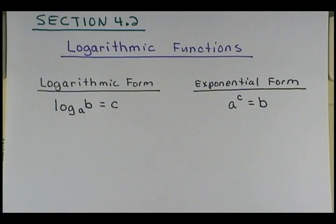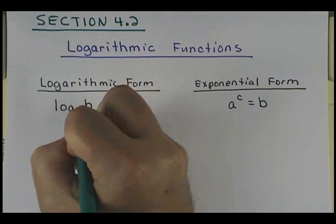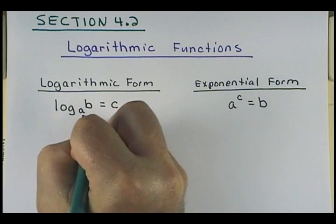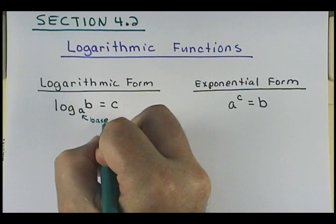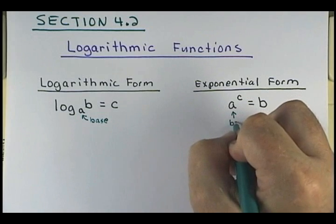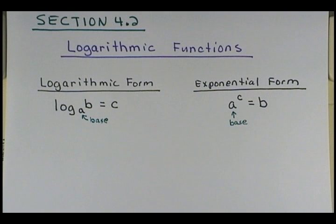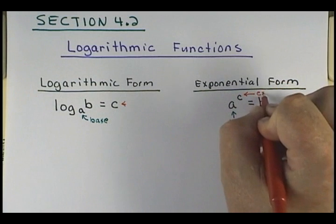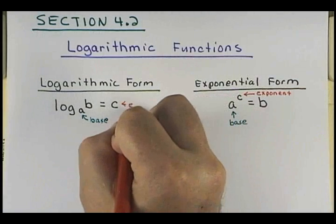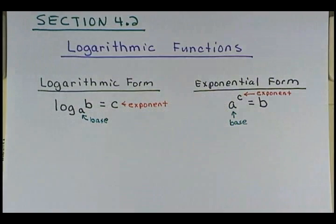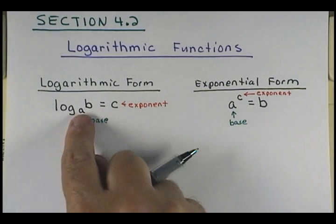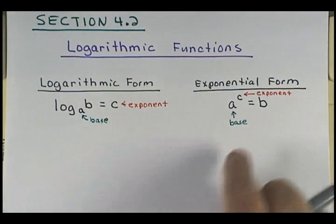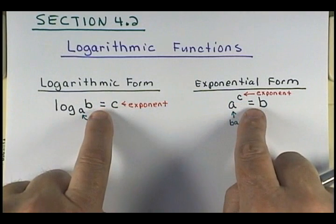This is the logarithmic form of this exponential form, and vice versa. When we're in the logarithmic form, A is your base — notice how it's the base over here too. C becomes the exponent when you convert. So when rewriting from logarithmic form, you go: base to the power equals what you're taking the log of. Base to power equals what I'm taking the log of.